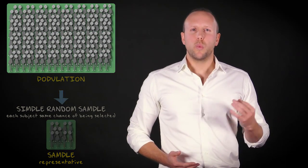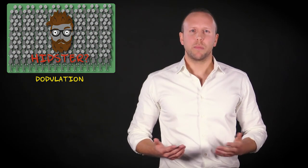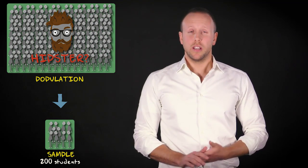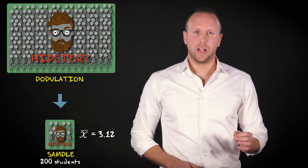Imagine, you want to know to what extent students in London identify themselves as hipsters. You decide to draw a sample of 200 respondents. The mean hipsterness score, which could range from 0 to 10, is 3.12.